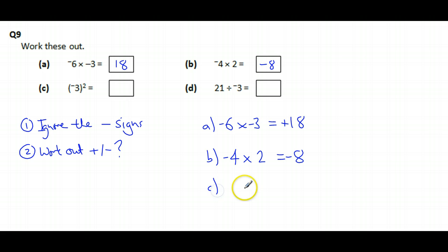Let's look at C. Let's look at 3 squared. Well, that means 3 times by 3, which is 9. So 3 squared means 3 times 3, which is 9. But it says minus 3 squared, so let's go ahead and put it in. Minus 3 squared really means minus 3 times minus 3.